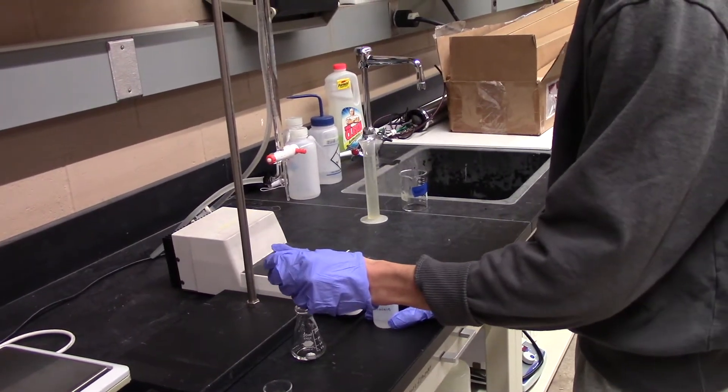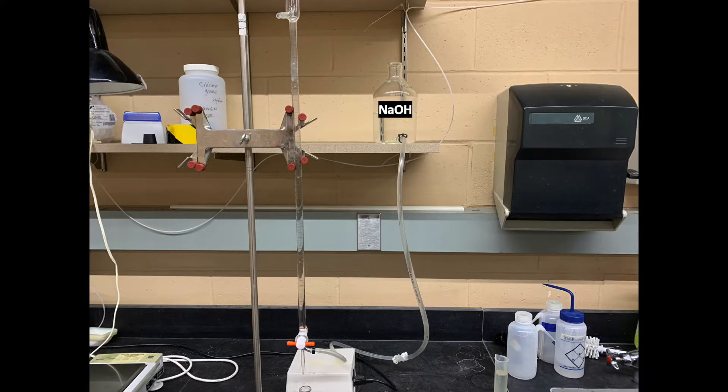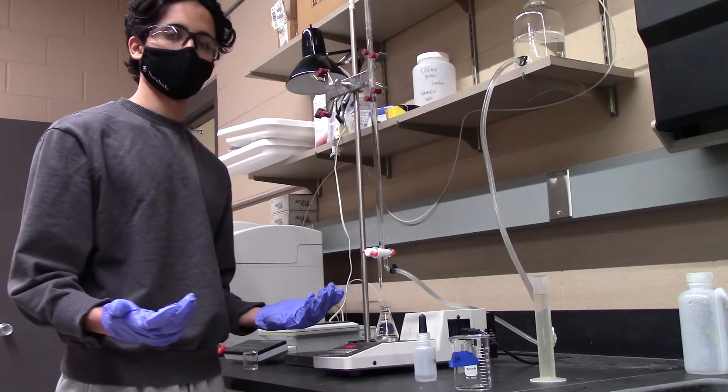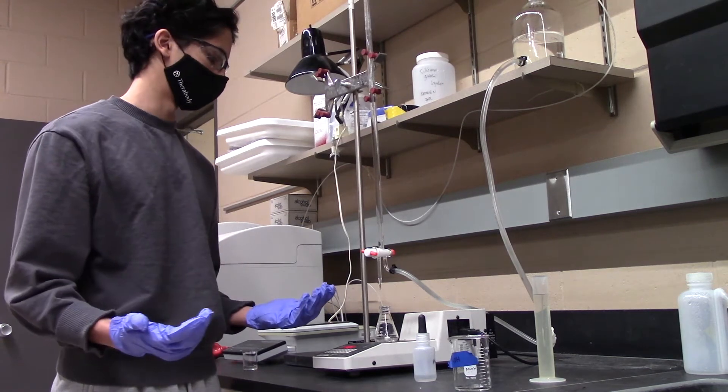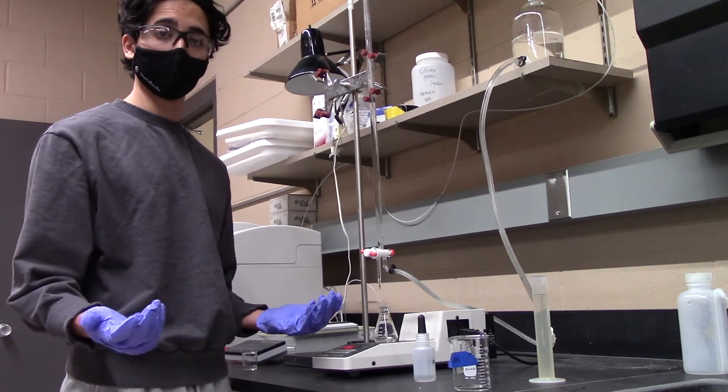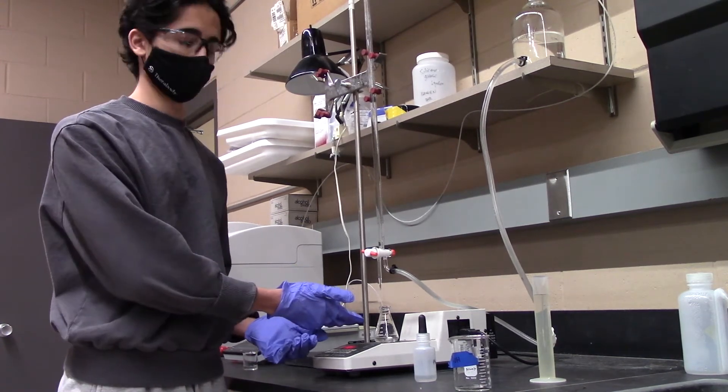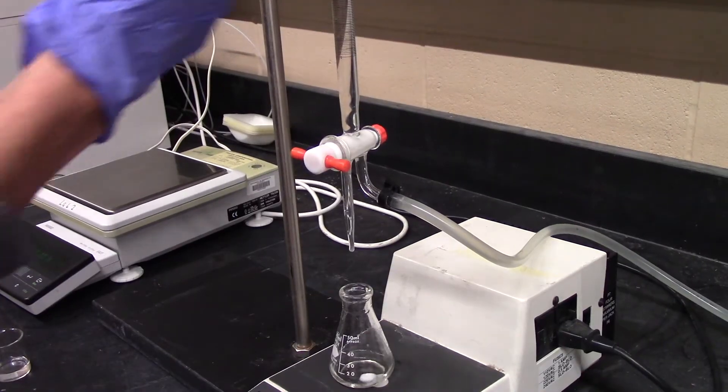Then add a drop of phenolphthalein indicator. The titration system should be set up as such. Once everything is set in place, it is time to titrate until you see a clear color change within your solution.